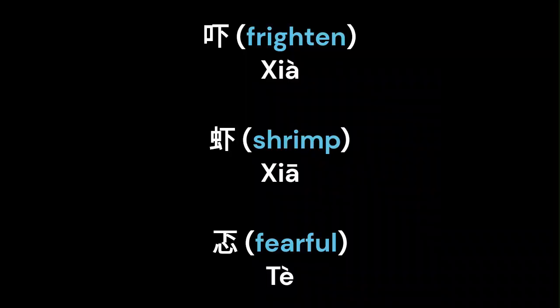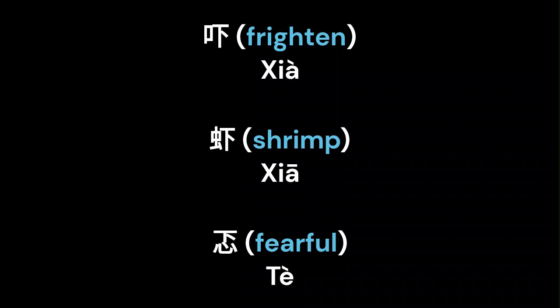下 can be found in words such as frightened, shrimp, and fearful. This makes it an important character to learn.